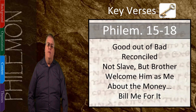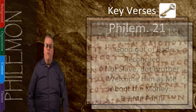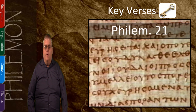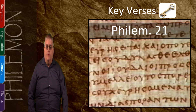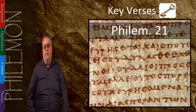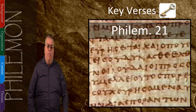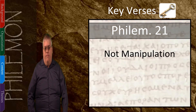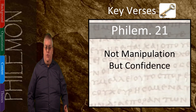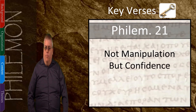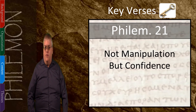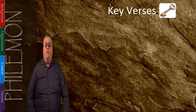And that leads to the last key verse, verse 21: 'Confident in your obedience, I write to you, knowing that you will do even more than I ask.' In this verse, Paul was still not trying to manipulate Philemon, but he expressed his genuine confidence that Philemon would do what is right, because as Paul described earlier in the letter, Philemon had already proven his Christian character and loyalty to Paul.